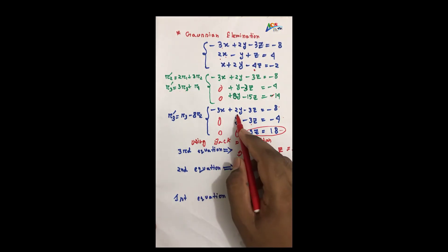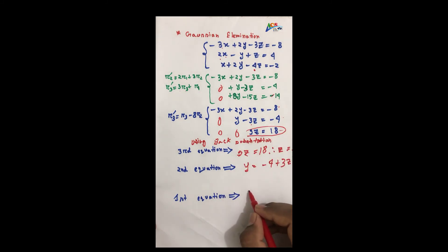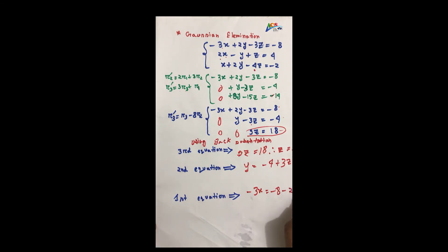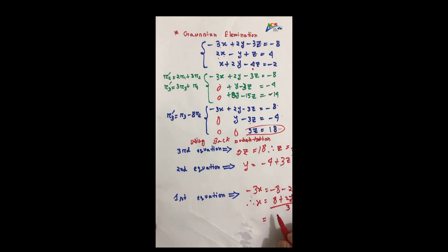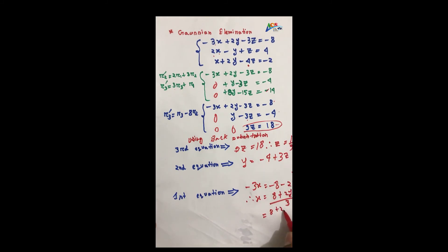For x: minus 2 minus 3x minus 3 plus 3z. The y value is 2 and the z value is 2. So x equals 8 plus 2 into 2 minus 3 into 2, divided by 3. That gives 8 plus 4, which is 12, minus 6, giving 6 divided by 3, equal to 2.